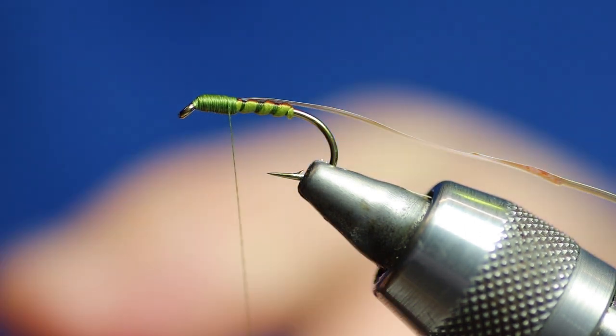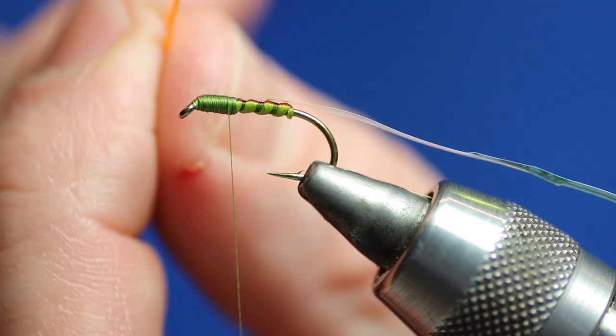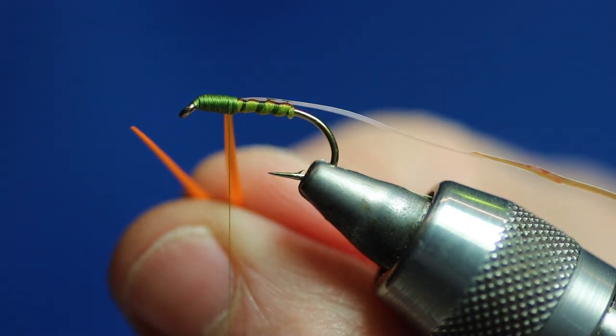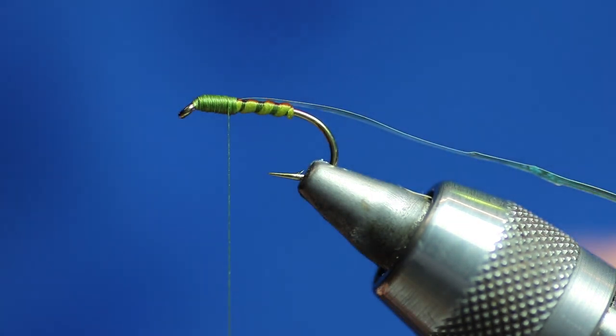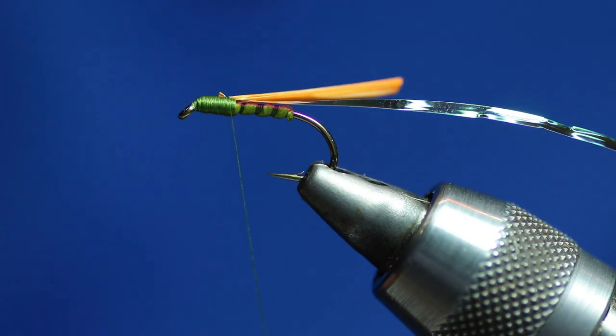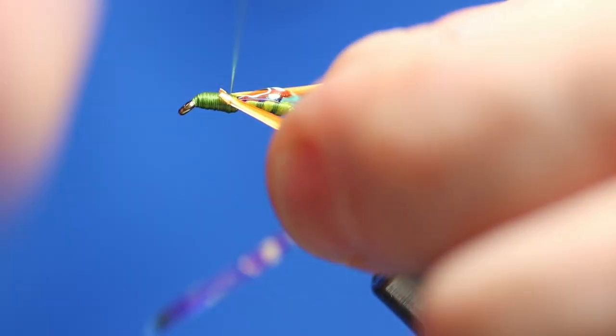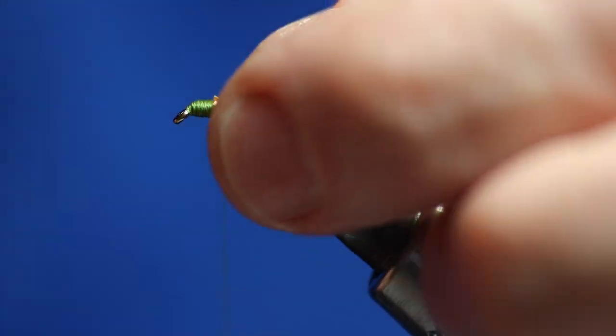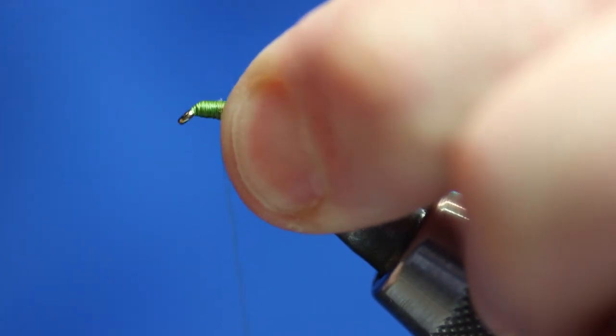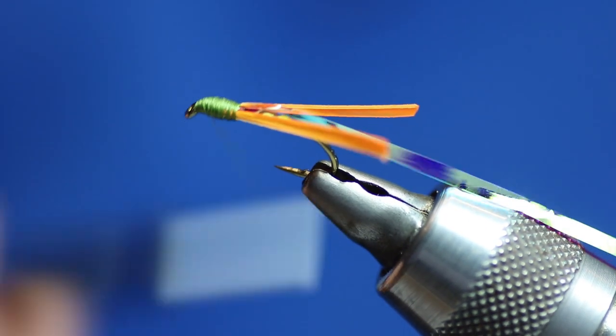Then what we'll do is we'll get our biots. So we're wanting two goose biots. They're obviously concaved, so you can see one points one way and one points the other way. I'll just nip off the tips. And obviously we tie them in so they're coming out the way from the thread. But we tie them in by the tip. Catch that in. And we'll just tighten down on it. And we're just going to build up. Keep going.